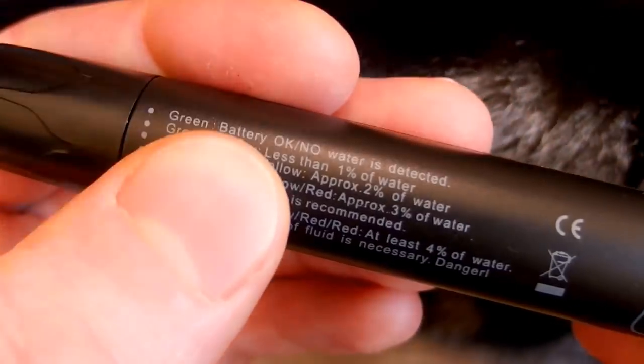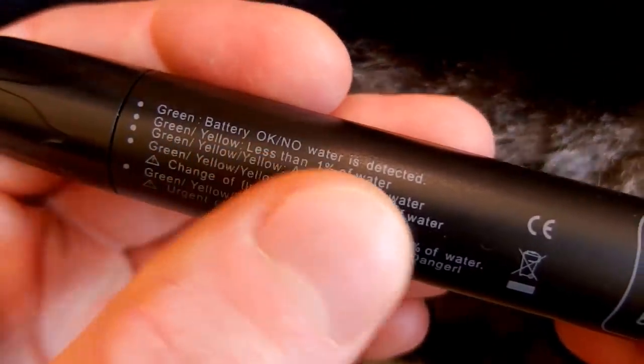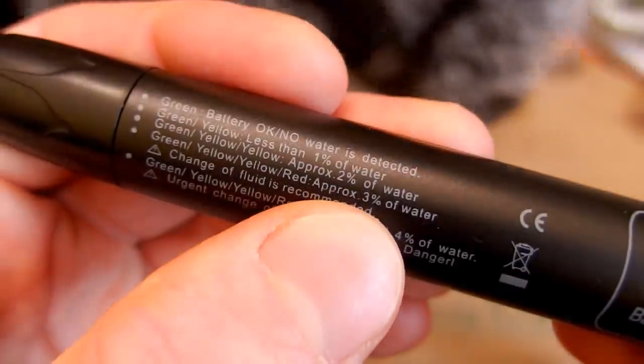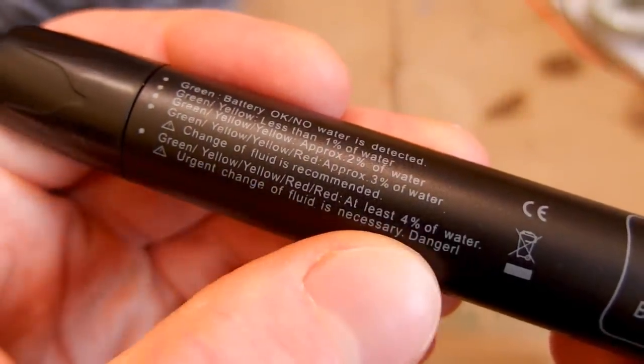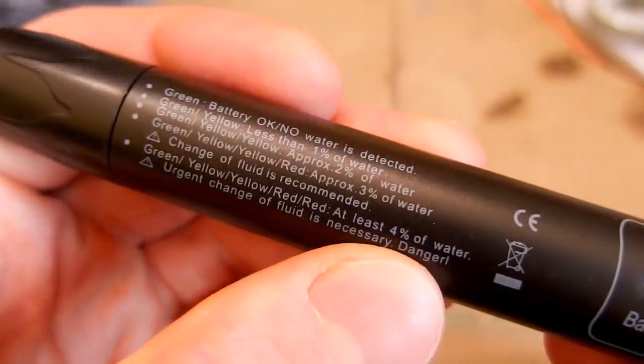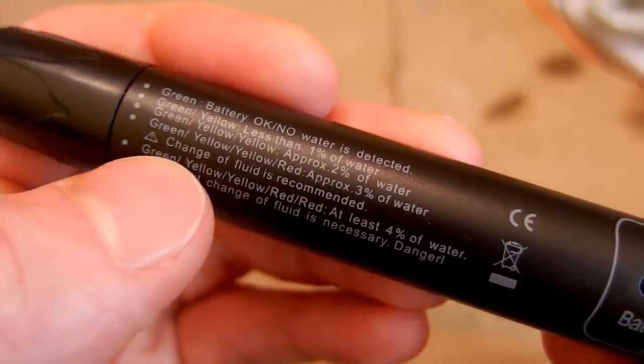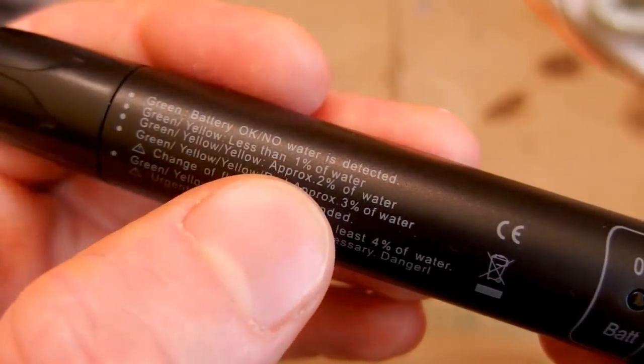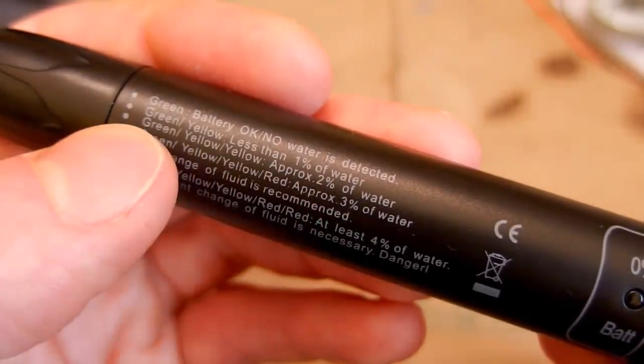Green LED means that the battery is ok and there is no water detected. And more LEDs mean more water absorbed and over 4% is a danger. At 3% you should already replace your fluid. And at about 1 or 2% it's still kind of acceptable.